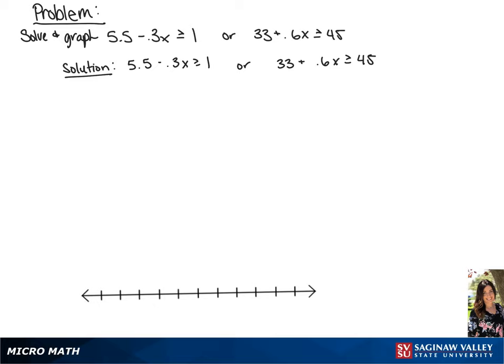We're going to start with our first inequality by subtracting 5.5 from each side, giving us negative 3x is greater than or equal to negative 4.5.